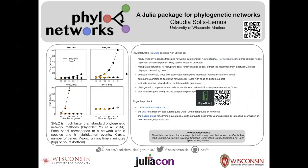Here we show a plot on the scalability of SNaQ compared to another widely used tool to estimate phylogenetic networks. The four different panels represent different networks of increasing size, from six species with one hybridization event to 15 species with three hybridization events. It's worth noting that for the network with 15 species, we could not run PhyloNetworks anymore — it was prohibited and we could only run SNaQ. The y-axis represents the running time in minutes or hours, and the x-axis is the number of genes.